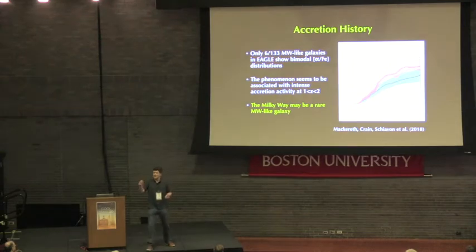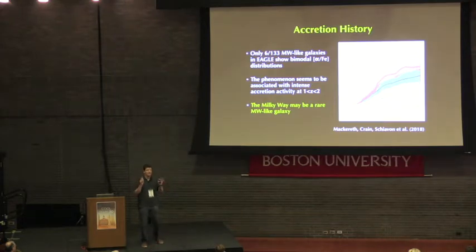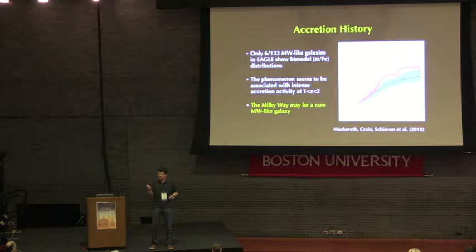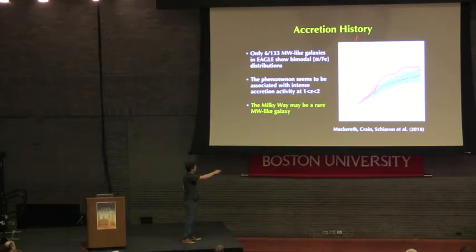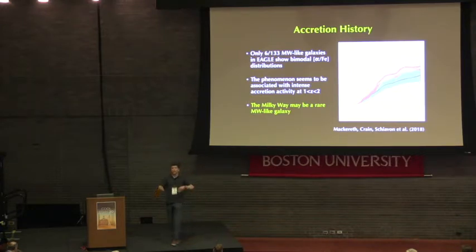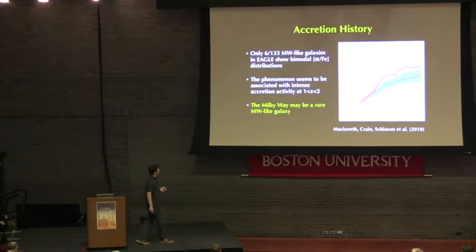Only six out of 133 galaxies in this volume have this bimodal alpha distribution — a very small fraction of about 5%. This suggests that the Milky Way, if the simulations are right, is rare. When we studied what caused this difference between these six galaxies and the rest, we found that the bimodal galaxies undergo a rapid accretion phase at redshift between 1 and 2. The Milky Way may have experienced, if the simulations are right, a rapid accretion phase at those times, about 8 billion years ago.